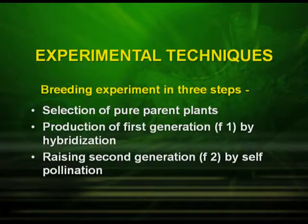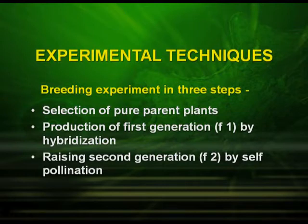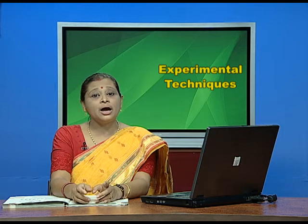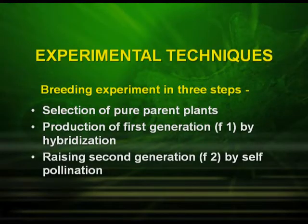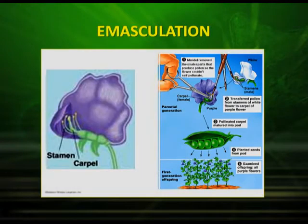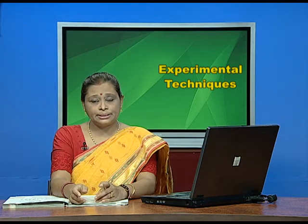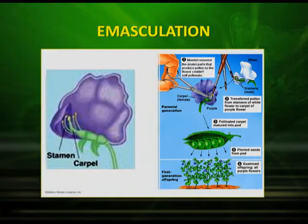Let us see the experimental techniques. He performed breeding experiments in three steps: the first step was selection of pure parental lines, the second step was raising the F1 generation, and the third step was raising the F2 generation by self-pollination. The cross-pollination technique used is called emasculation — the anthers are removed from one plant and pollen grains from another plant are dusted on the stigma of the female plant.